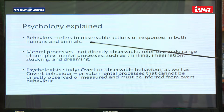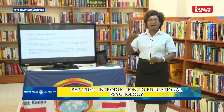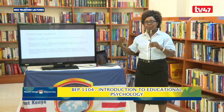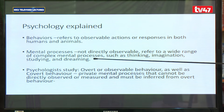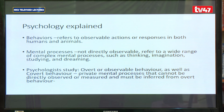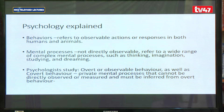When you look at mental processes, we cannot observe them directly. You can't observe the mental processes in a person, which is why we have to see the way someone is behaving to tell how this person is thinking. Mental processes are not directly observable, but they refer to a wide range of processes — the thinking, the way someone thinks, their imagination, the way someone studies, dreams, feels, their emotions, perception, attitudes — all those are aspects of mental processes. These are some of the things we shall focus on later in this unit, Introduction to Educational Psychology.